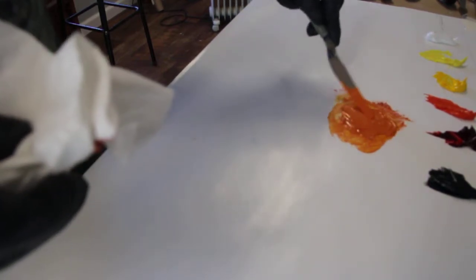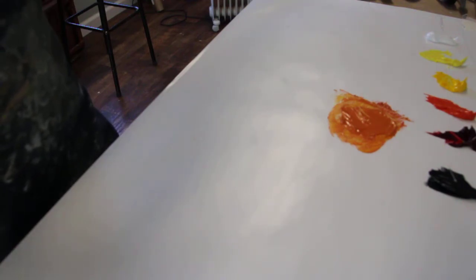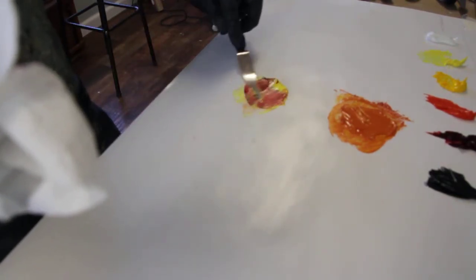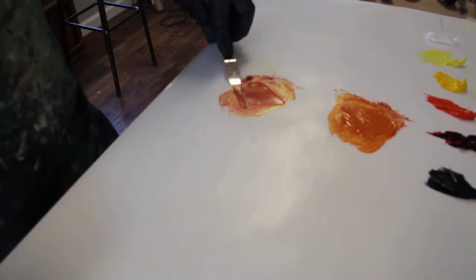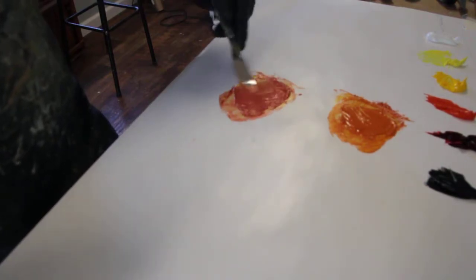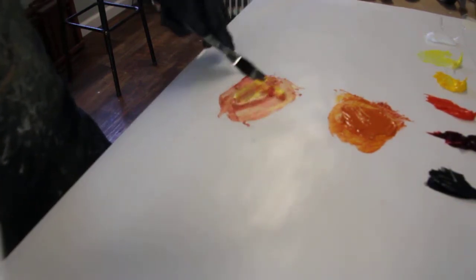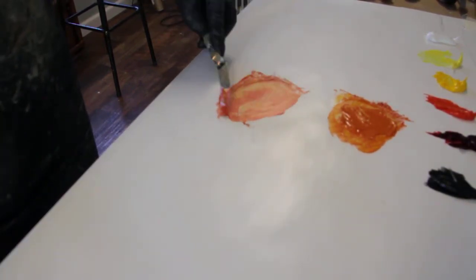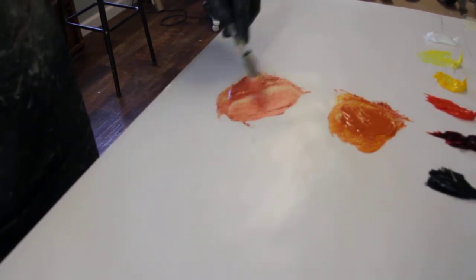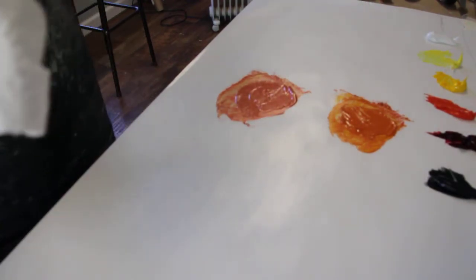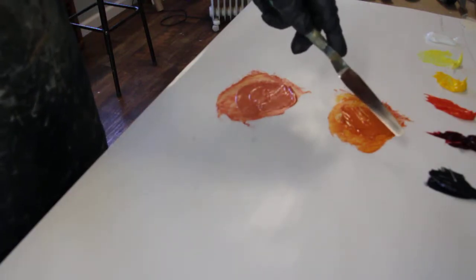A nice pungent bright orange. And then I'm gonna take alizarin crimson again and the cooler yellow, mix those together. A little more of that yellow, trying to get them to the same value so you can see the difference. This is a cooler orange compared to this which is a warmer orange. Subtle but very important.